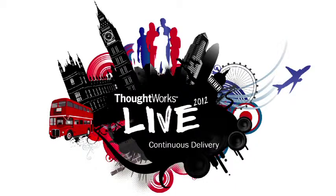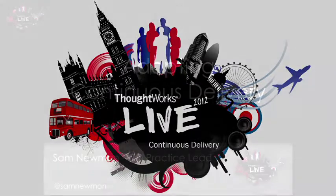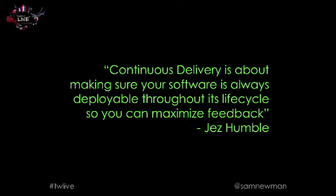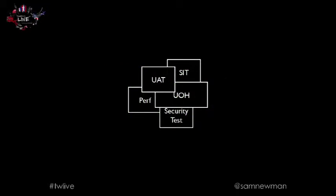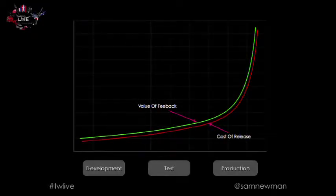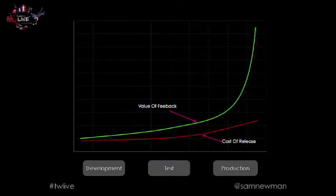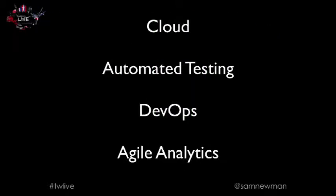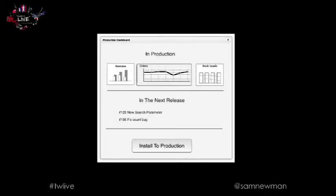Earlier we gave a brief introduction to continuous delivery. We talked about what continuous delivery is — making your software always deployable to maximize feedback — the issues associated with getting software into production, reducing the cost of a release, continuous integration, cloud automated testing, DevOps, agile analytics, and a vision for what continuous delivery might deliver for your organization.